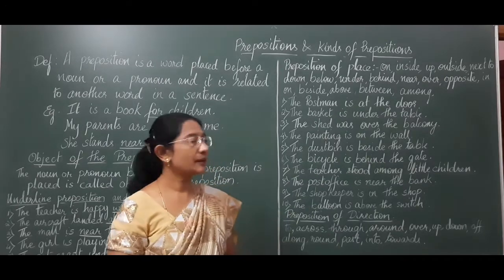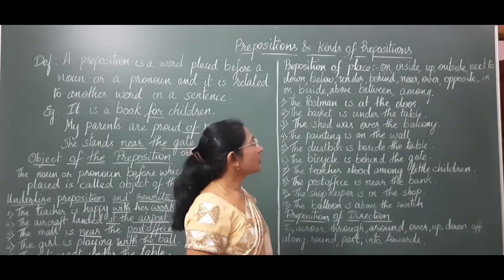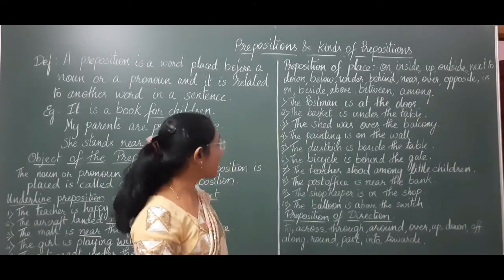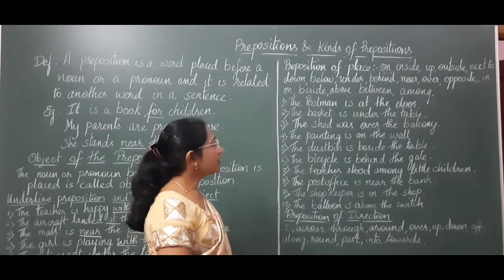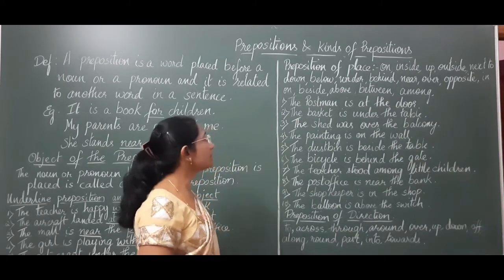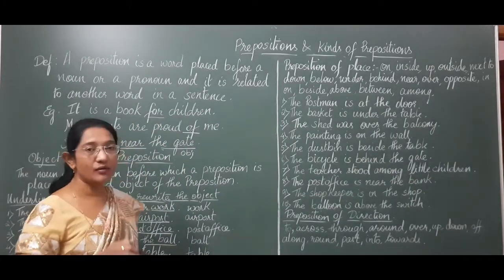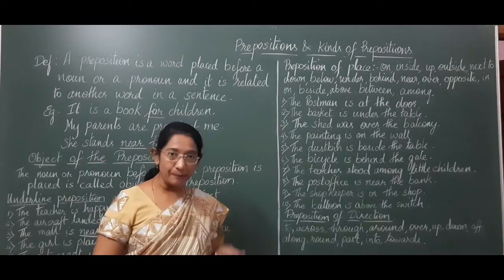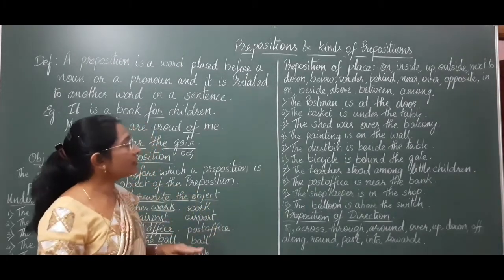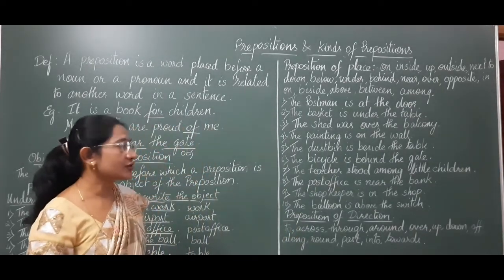Kinds of prepositions. Preposition of place: words like on, inside, up, outside, next to, down, below, under, behind, near, over, opposite, in, beside, above, between, among — these tell about the position or the place of something. Wherever these words point to a position, they are prepositions of place.